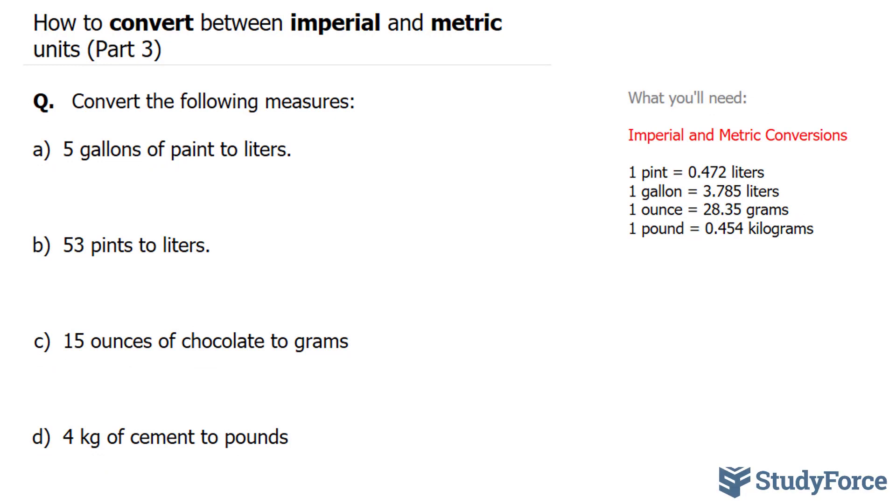In A, they want us to convert 5 gallons of paint to liters. Gallons is an imperial unit, liters is a metric unit. The conversion factor that we'll be using is shown right here. To convert 5 gallons, which I'll represent as GAL, to liters,